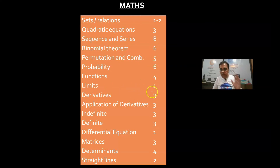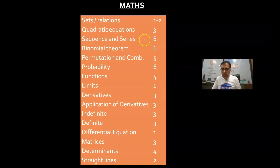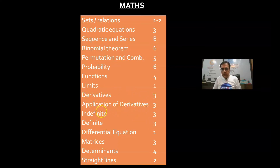For the last 3 years it has been 1 question consistently for limits, so the maximum you can hope for is 1 question this time. Based on the average pattern: Limits about 1 question, Derivatives about 3 questions, AOD about 3 questions, Definite Integration 3 questions, Indefinite Integration 3 questions — so the estimated pattern for calculus can be around this. We have to estimate what this time's pattern can look like.